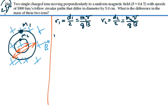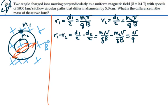So radius 1 minus radius 2 would be equal to diameter 1 divided by 2 minus diameter 2 divided by 2. And that would be equal to mass 1 velocity over charge times magnetic field minus mass 2 velocity over charge times magnetic field. Or if we factor out velocity over charge times magnetic field times mass 1 minus mass 2.